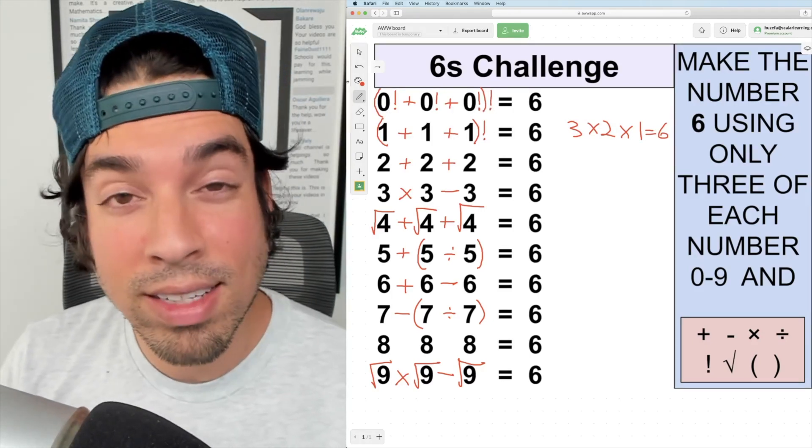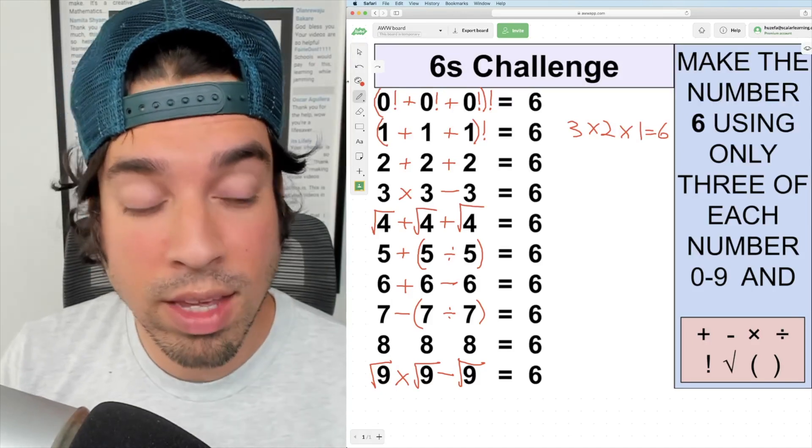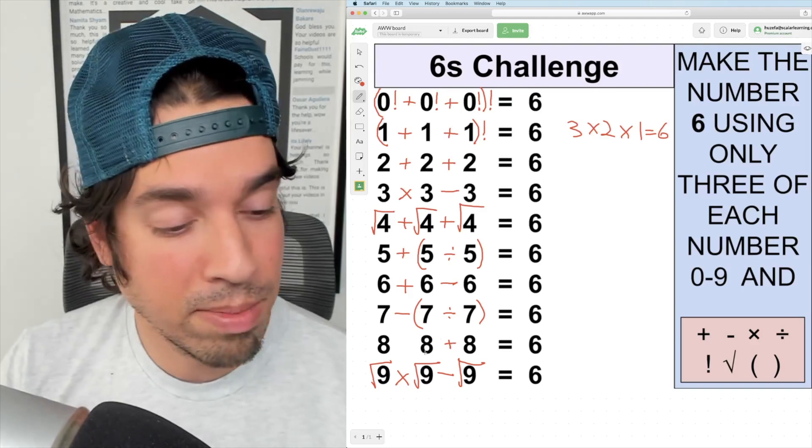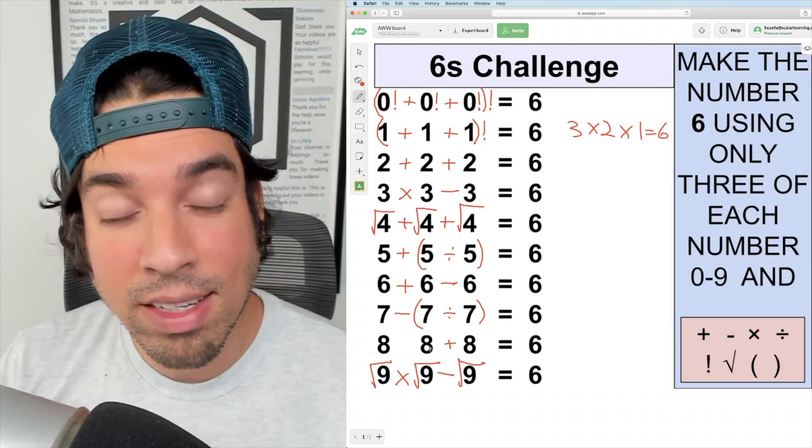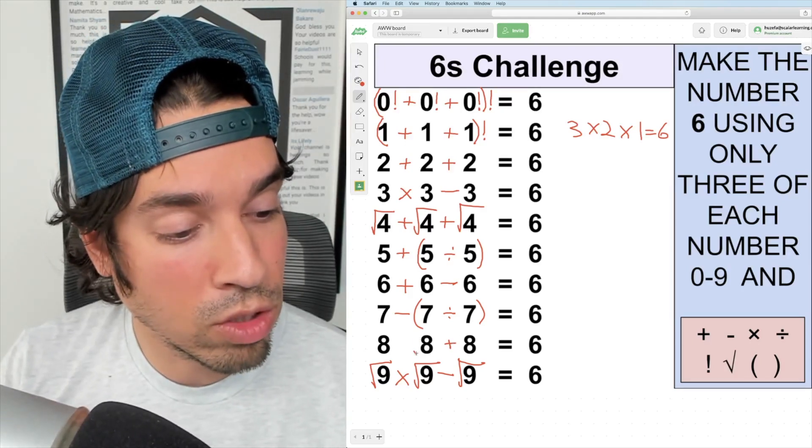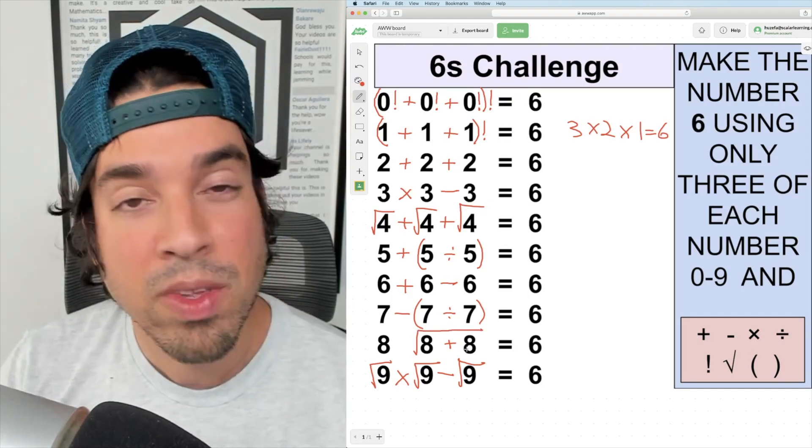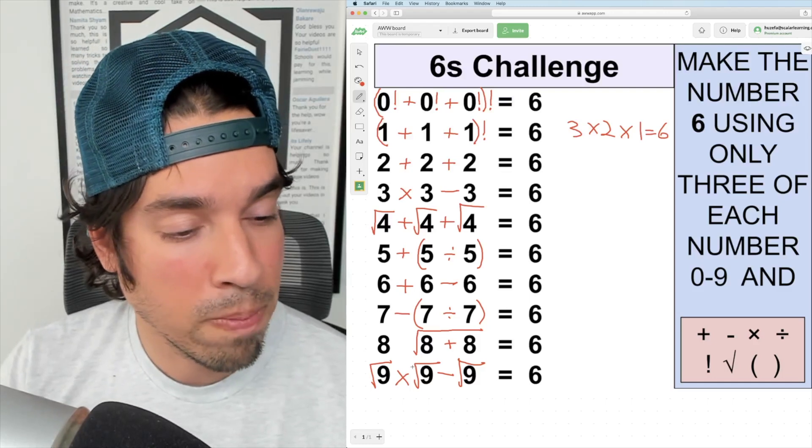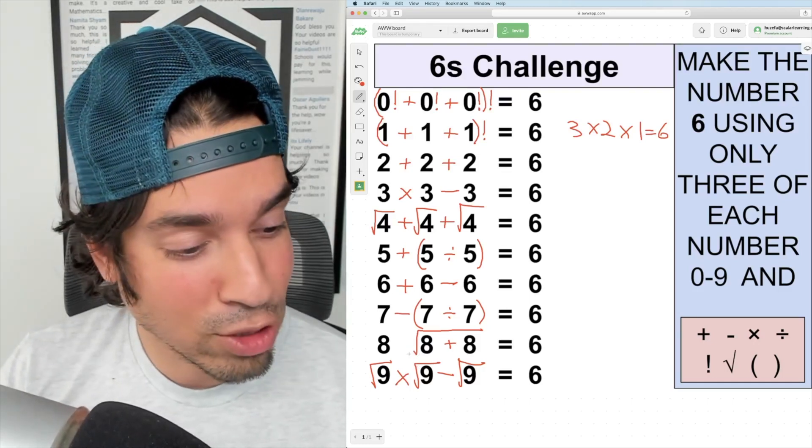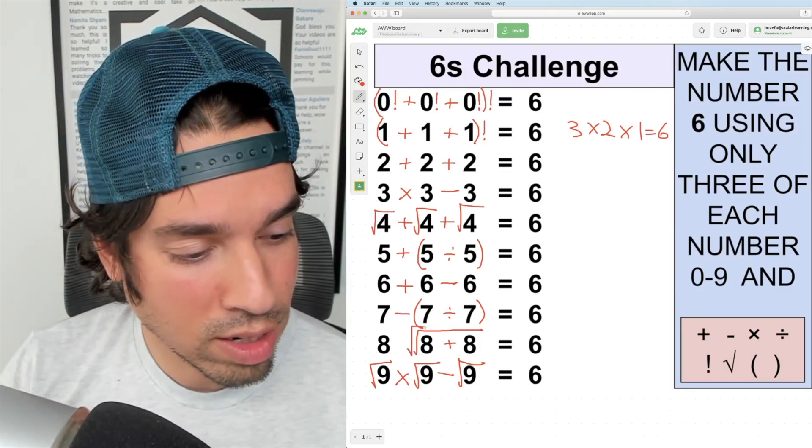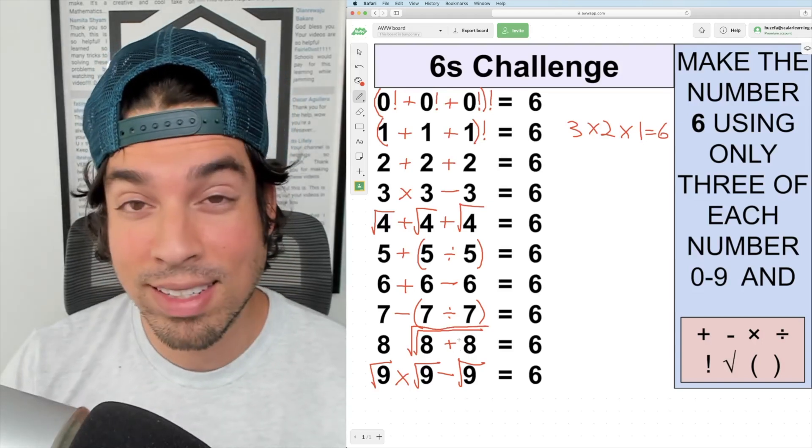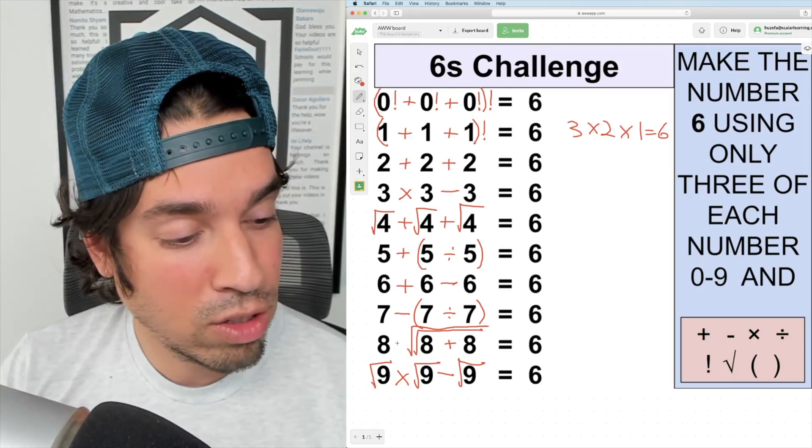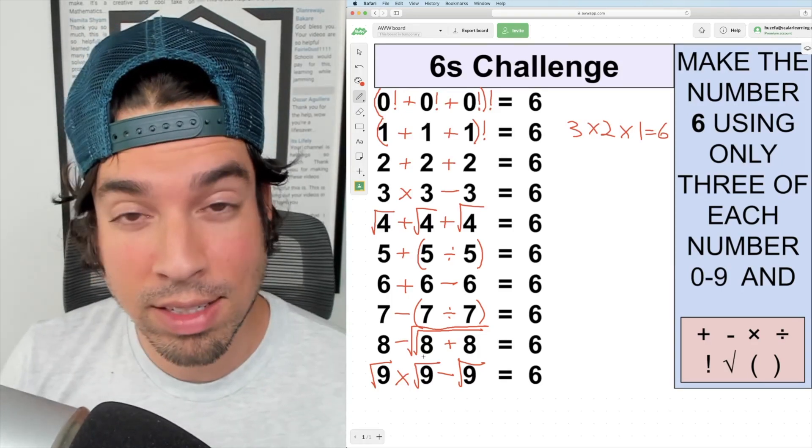Now we're on to what I consider the most difficult triplet: the eight. First, I'm going to add these two eights together. That gives me 16, and that's great because that's a perfect square. Then I'm going to take the square root of that. What's the square root of 16? That's 4, but I can square root that again. So I'm going to throw a double square root on top of this. I take the square root of 16, which is 4, then the square root of 4, which is 2. Now I just subtract 2 from 8 and we've got 6.